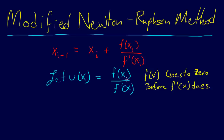That is advantageous because if f(x) goes to zero before f'(x) does, then the numerator will be zero before the denominator, so we don't have that problem. So we want to use this new function u(x) and apply the Newton-Raphson method to it. Since the roots of u(x) are the same as the roots of f(x), we say x_{i+1} = x_i - u(x_i) / u'(x_i).